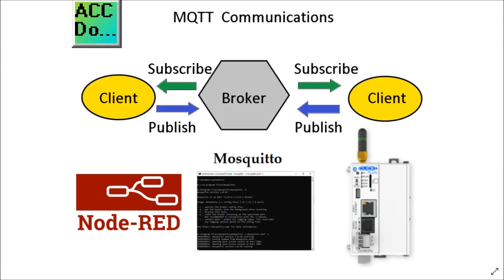We will now look at the MQTT communication capability using our Click Plus PLC. MQTT stands for Message Queuing Telemetry Transport, and this simple publish-and-subscribe communication protocol does not take too many resources. Constrained devices with low bandwidth are ideal for MQTT. This is why it works on things like a Raspberry Pi, and it is basically used as the protocol for the Internet of Things, or IoT.